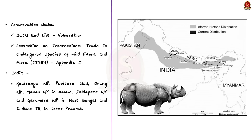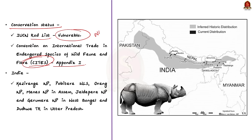Talking about their conservation status, the Greater One-Horned Rhino is listed as Vulnerable on the IUCN Red List, and it is also protected under Appendix 1 of the CITES Convention. In India, it is protected under Schedule 1 of the Wildlife Protection Act 1972. The threats faced by them include habitat fragmentation, loss of habitat, poaching for their horn, illegal hunting, trading, and sometimes floods and human-animal conflict.